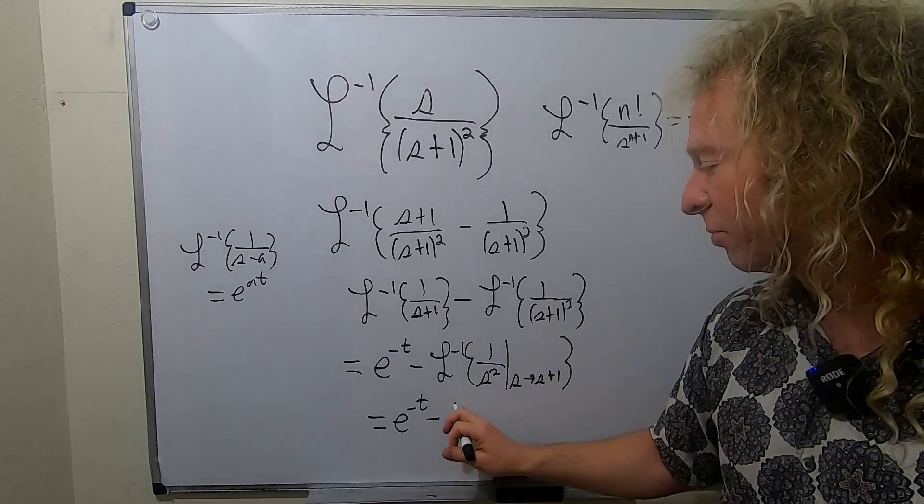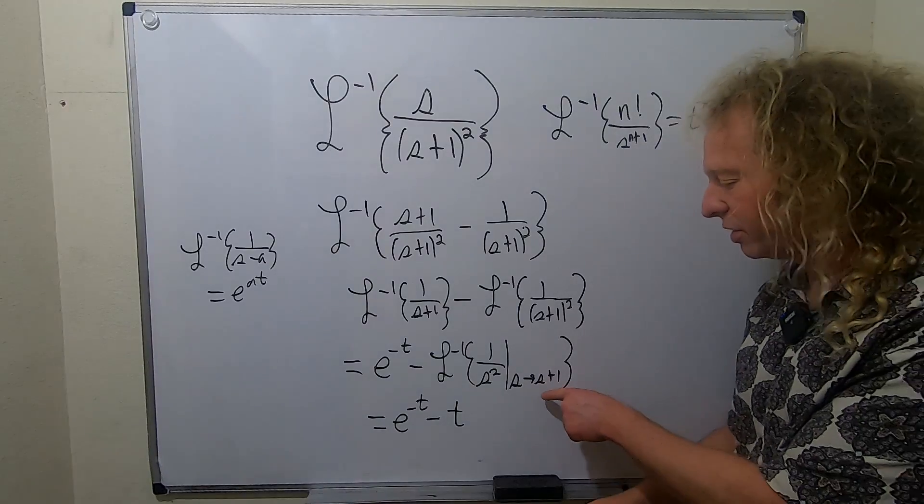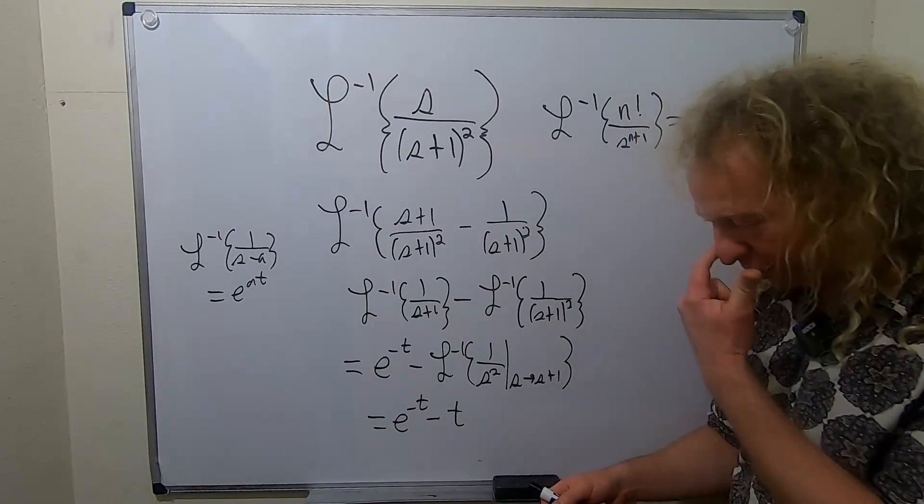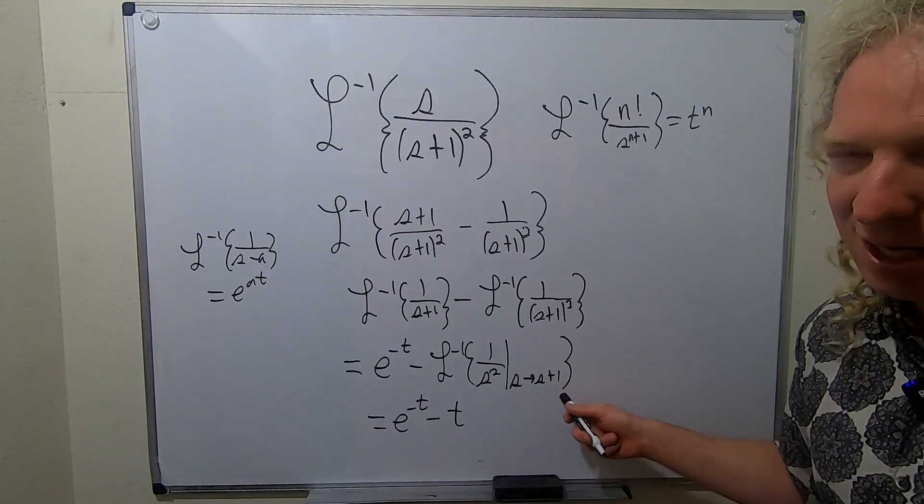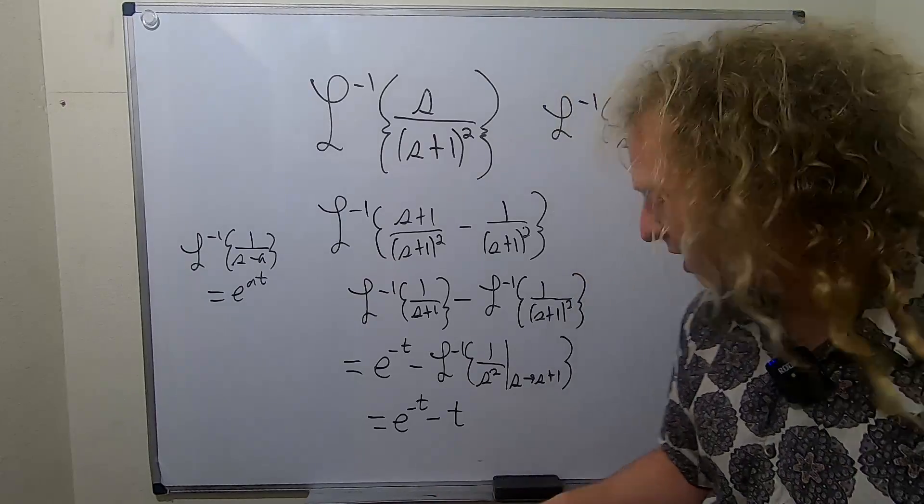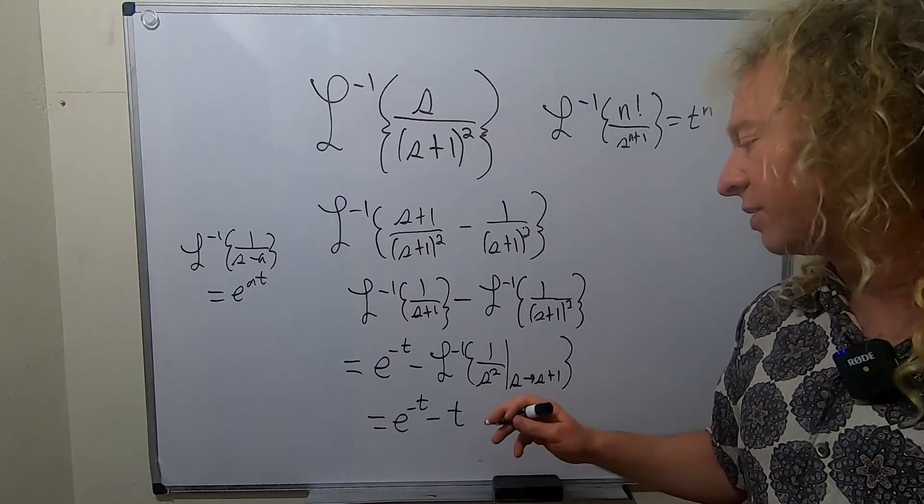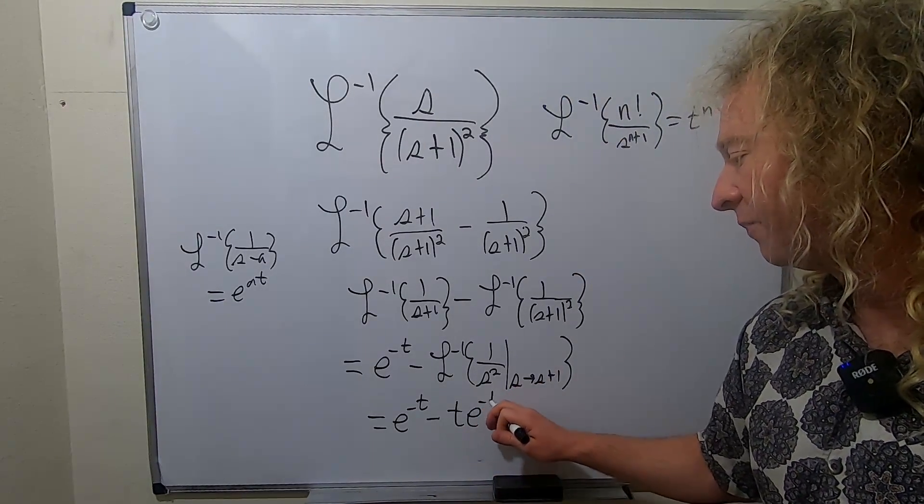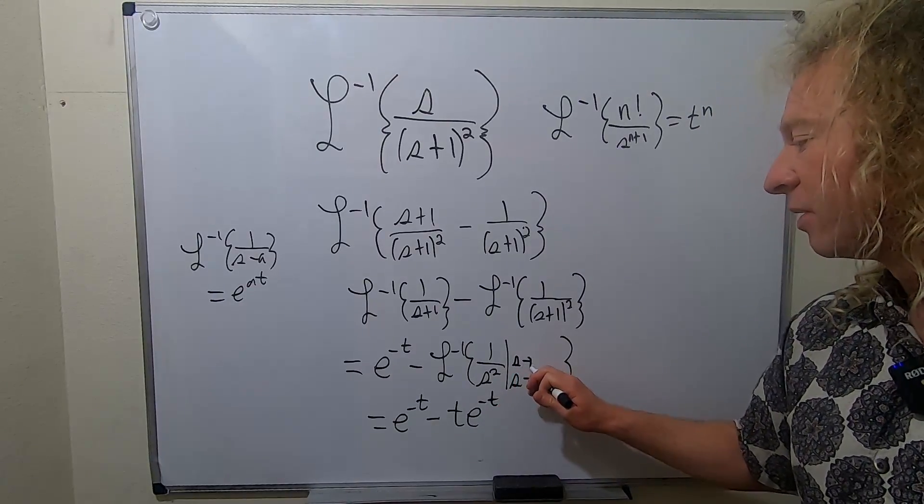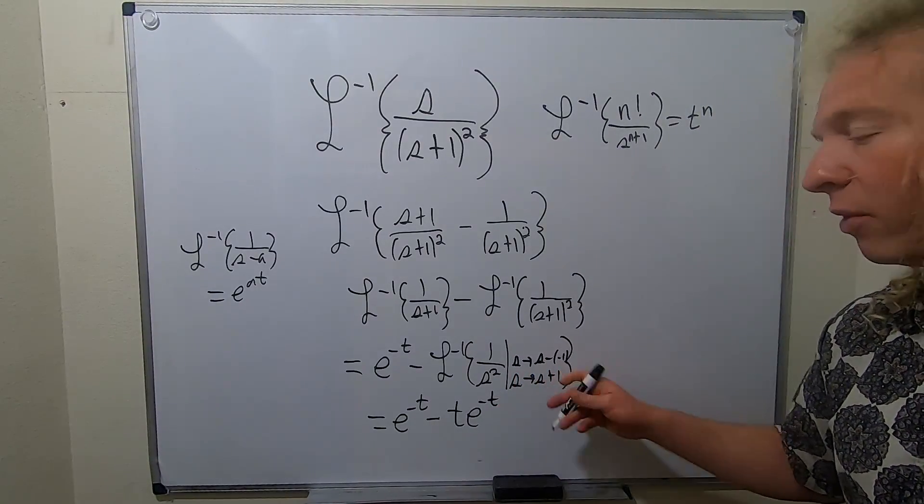Remember if you shift from s to s-a it gives you e^(at). Here we're going from s to s+1, so it's going to give us e^(-t) because it's really s to s minus negative one. So that's your a, and that my friends would be the final answer to this problem.